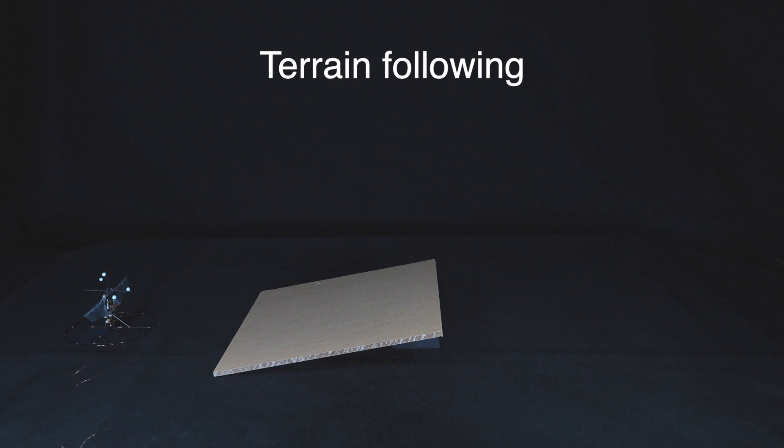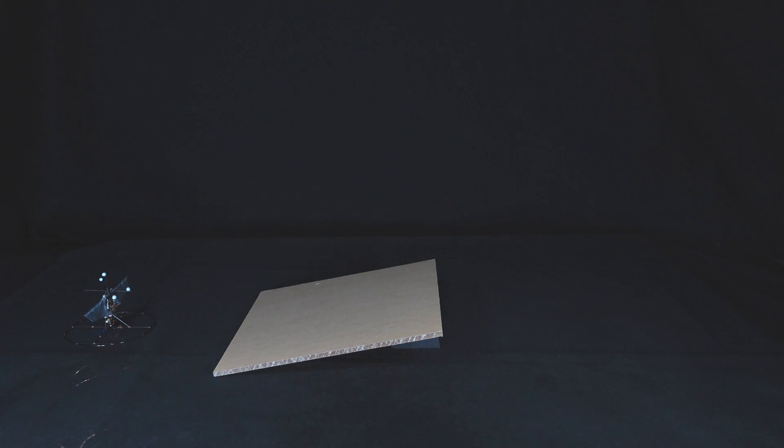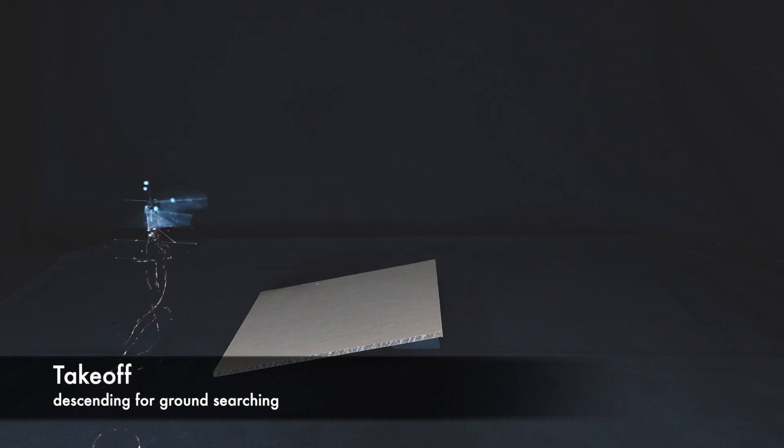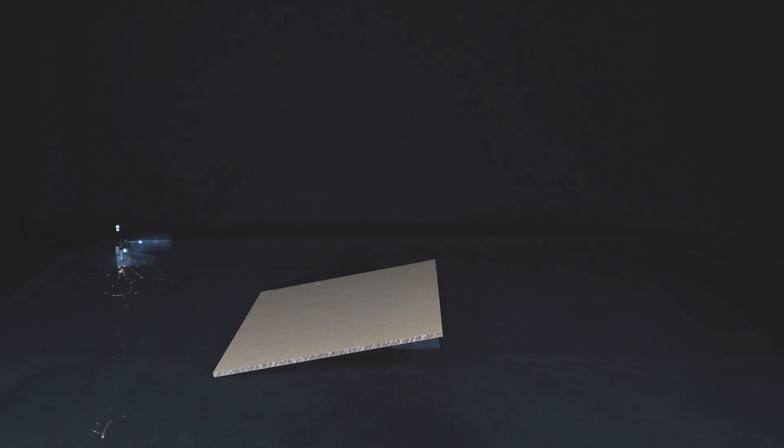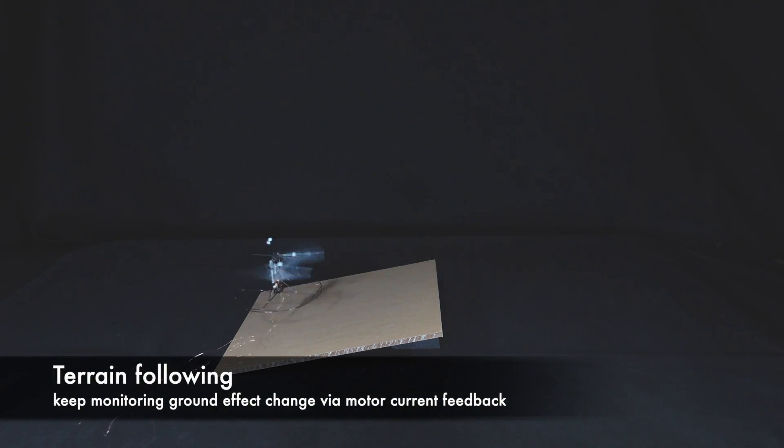The robot has motor current feedback to monitor the instantaneous wing loading, which can be used to sense the surroundings. This current feedback can detect the ground effect while flying low, allowing the robot to adjust the ground clearance and follow the terrain. Utilizing the motors for both sensing and actuation is helpful for small-sized robots that need to be efficient.